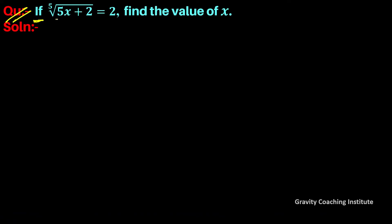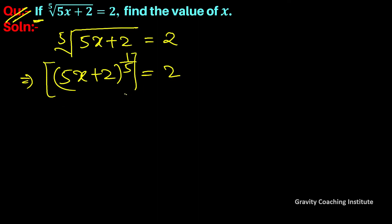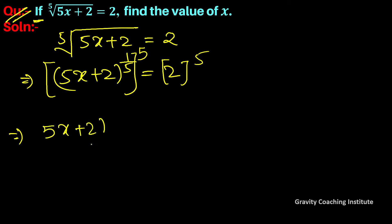Question: if the 5th root of (5x + 2) equals 2, find the value of x. Given the 5th root of (5x + 2) = 2, we raise both sides to the power of 5. 2 to the power of 5 is 32.